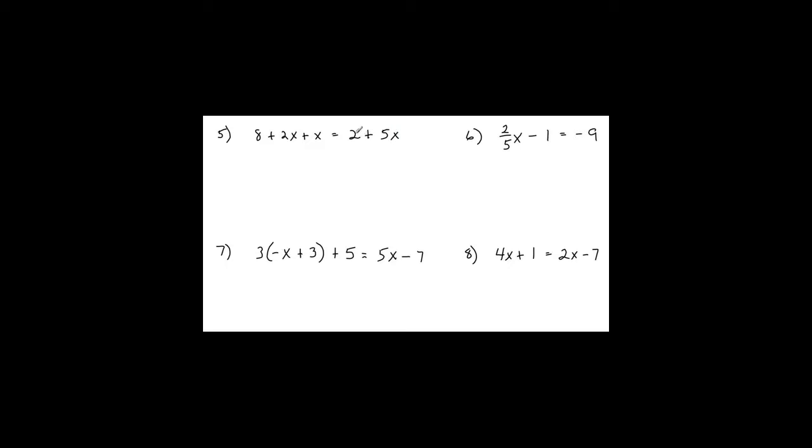Number 5 — no distributive property. Checking for combining like terms: on the left I have two variable terms, both x's. So I combine 2x and 1x to get 3x, bringing down the 8 as well. On the right I have a number term and a variable term, so I can't combine those — I just rewrite them.